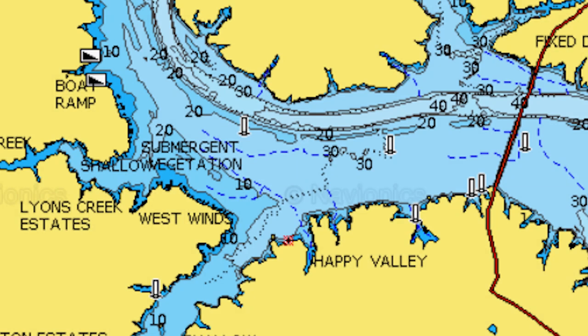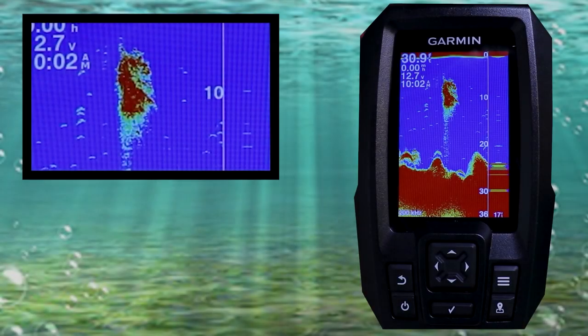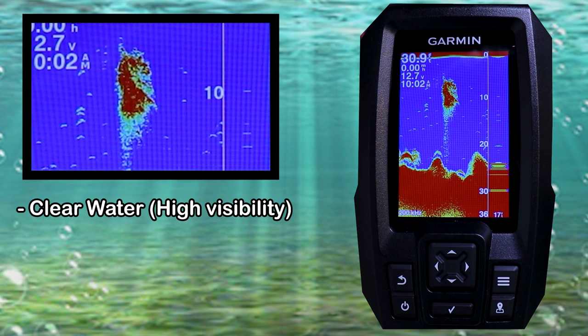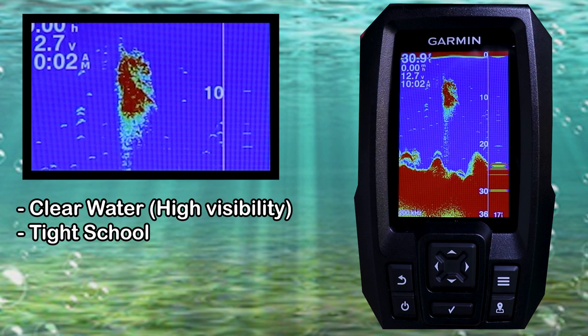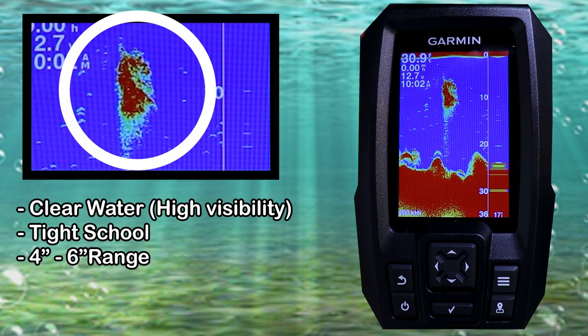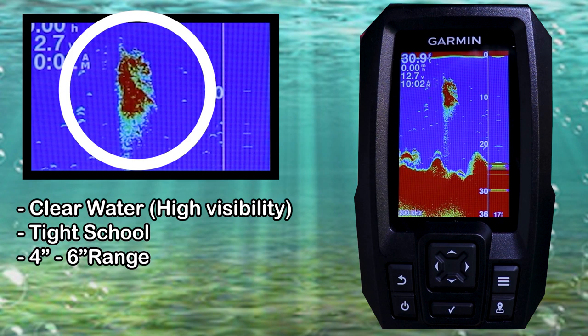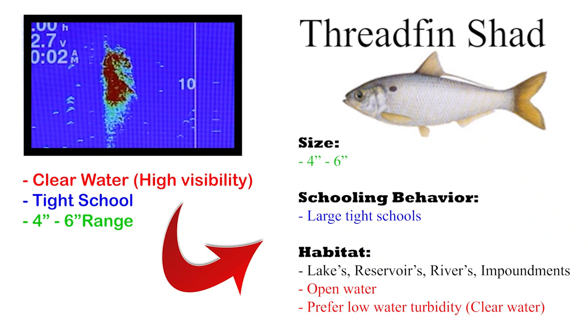Our next images take us out to the main lake, specifically around a channel that goes under a bridge. Since this area is on the main lake, the water has good clarity and high visibility. If you look closely, you'll see this image shows our bait fish in a close, tight-knit group. Also, since no individual fish really stand out on the sonar, we can assume that these are probably very small fish — probably something in the 4 to 6 inch range. Through interpreting our surroundings and what we see on the sonar screen, we can make a pretty educated guess that what we see here is threadfin shad.